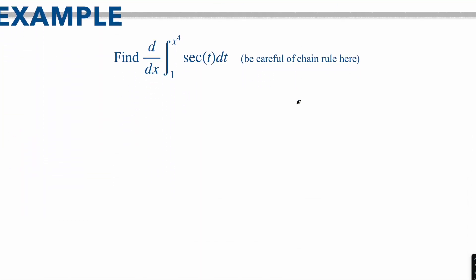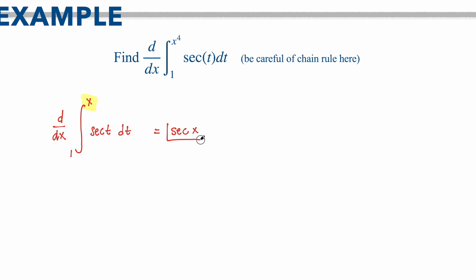For example, let's take the derivative d/dx from 1 to x of secant(t) dt. If we're taking the derivative of the integral, the answer is just going to be the original function in terms of the variable that we are inputting. So our answer would be secant(x). The 1 goes away because when you take the integral and plug in the number 1, you get a number, and when you take the derivative of that number it disappears — that's why you only get the original function back according to whatever variable you inputted.